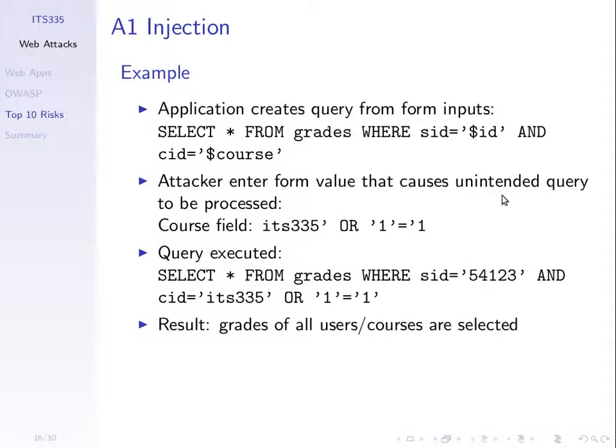We did a SQL injection attack in the lab on our demo website, where the web application does a query as part of its normal operation. The attacker enters into one of the form fields a value that triggers the web application to do an unexpected query. The one we did was similar to this: we entered a field which would normally take the course code, but modified it to include the SQL statement 'OR 1=1', meaning all true, which causes the query to return everything — which is unexpected.